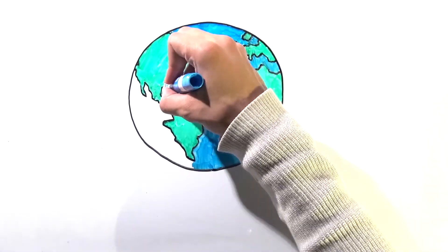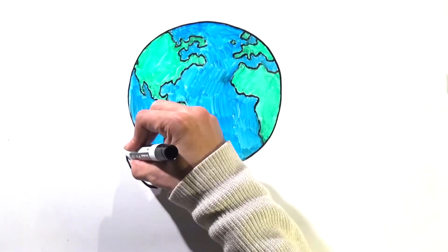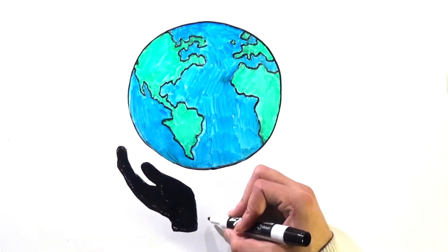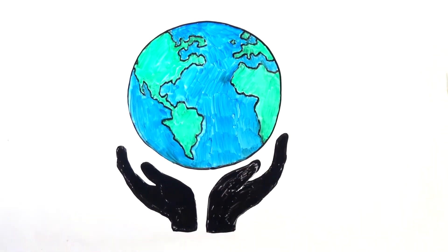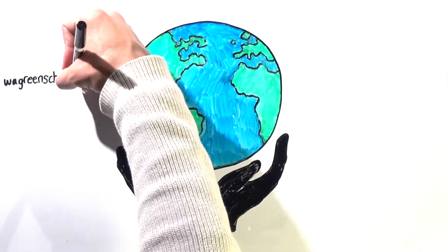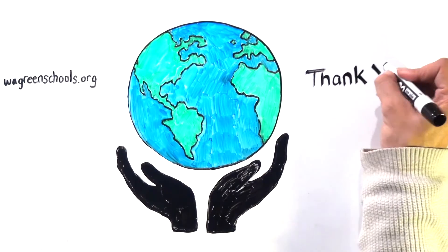Already, hundreds of schools have participated. Can you imagine what our state would look like if every child was a part of a Washington green school? Our state, country, and planet depends on the next generation, and we're ready to support them.